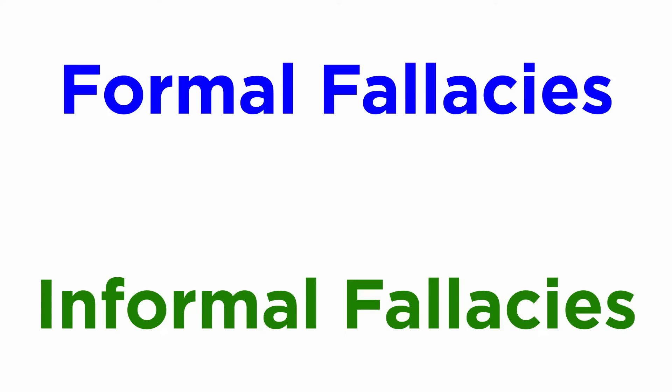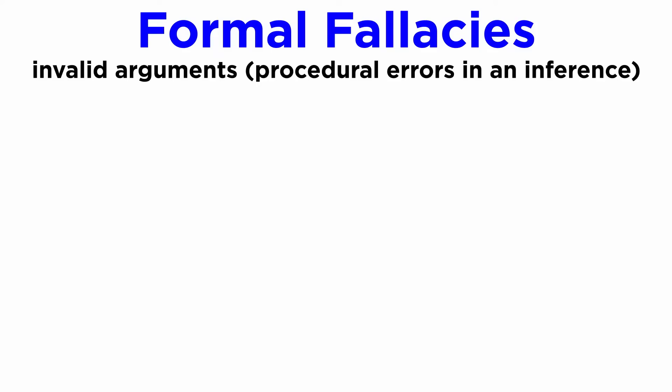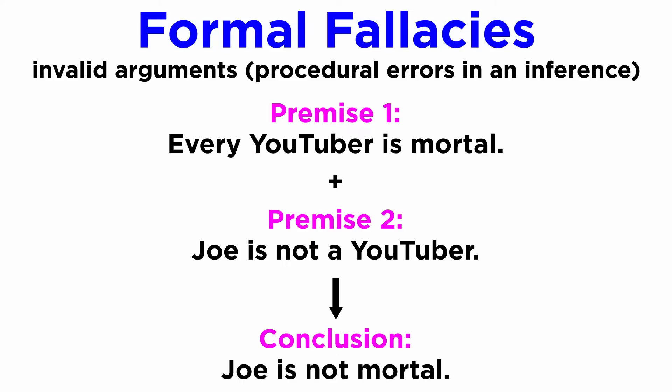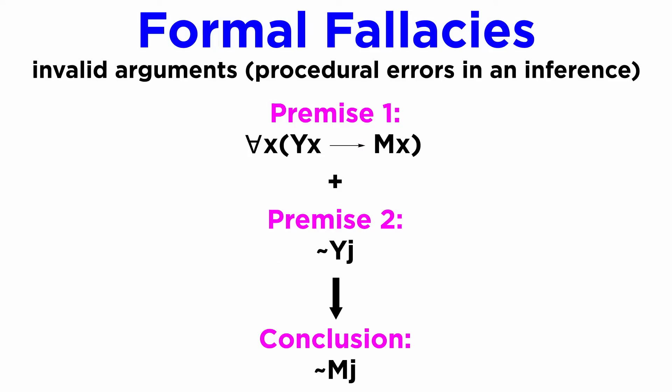There are two main kinds of fallacies: formal and informal. Formal fallacies are basically invalid arguments, having procedural errors in their inference, either generating nonsense or a seemingly valid result if it weren't for some detail. A simple formal fallacy would be like: every YouTuber is mortal; Joe is not a YouTuber; thus Joe is not mortal. Formally, we'd have: for every X, if X is Y, then X is M; J is not Y; therefore J is not M.